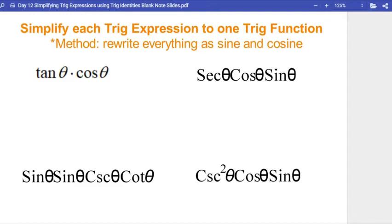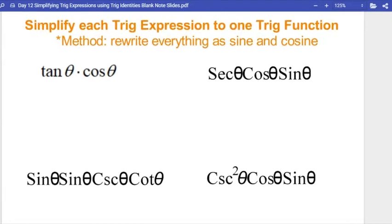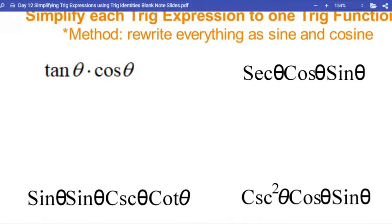Alright, so let's practice this. Simplify each trig expression down to one trig function. We're going to do that by using a strategy that I use 90% of the time, and that is to rewrite the entire expression in terms of just sine and cosine. So if you see anything that isn't a sine and a cosine, rewrite it as sine or cosine. Okay, so let's look at this first example. You can pause the video if you need to get caught up on writing this down, but I'm going to dive right in.